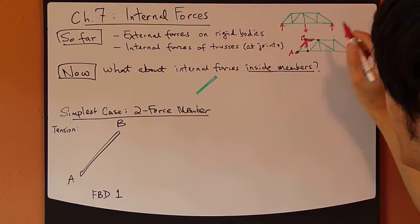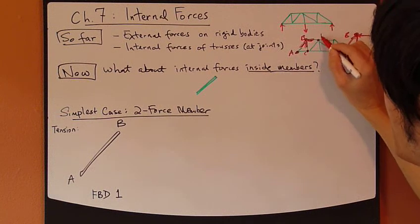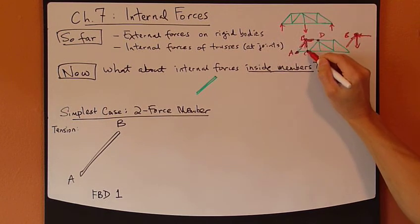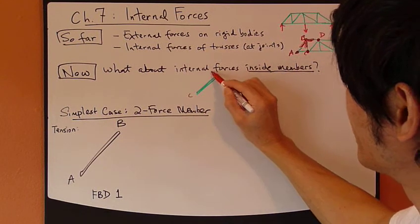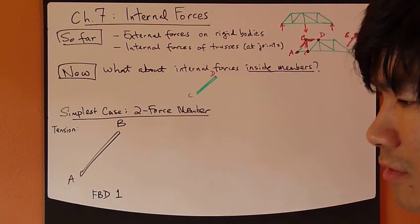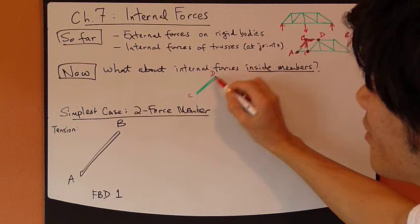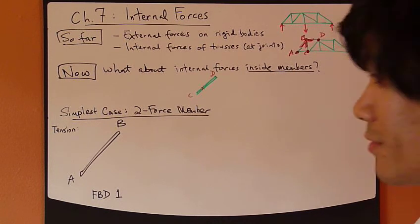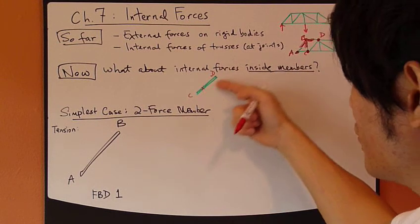Now, what happens inside a member? Let's say I take member CD. What we've discussed so far lets you figure out the forces acting at each joint. But what if I asked you: what are the internal forces somewhere inside member CD — let's say at this position? What are the directions and magnitudes of forces inside this member CD?